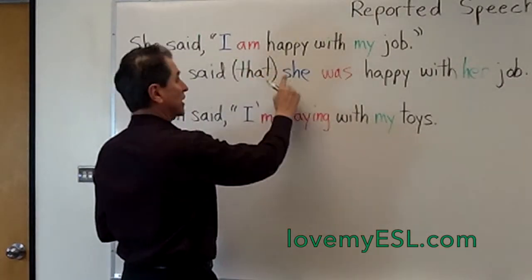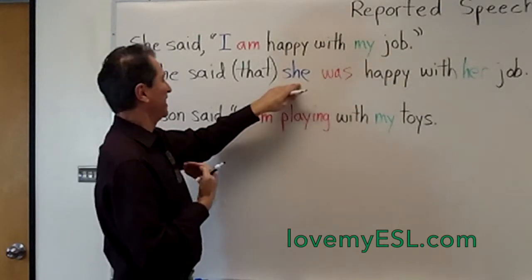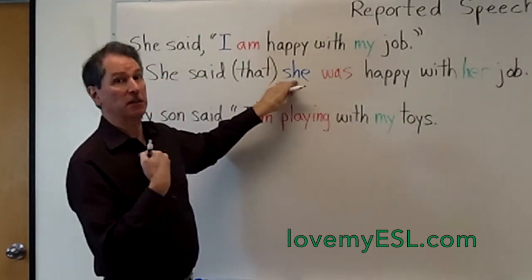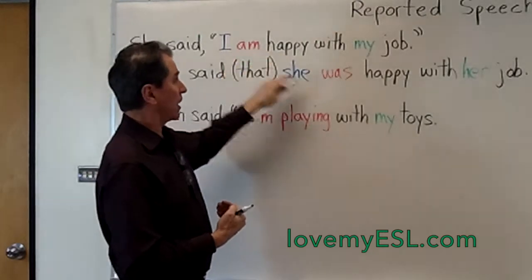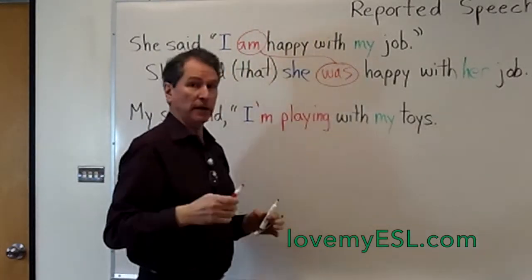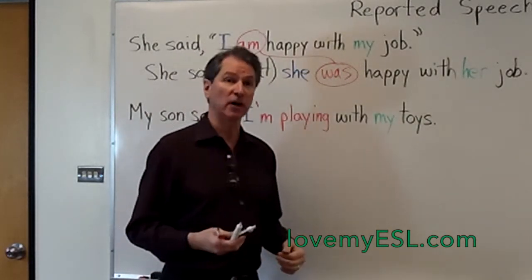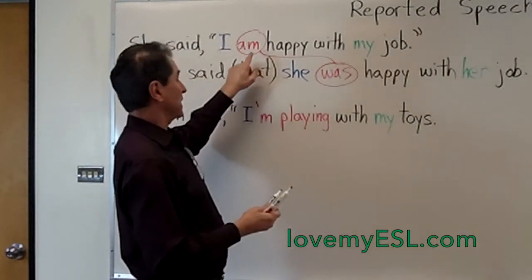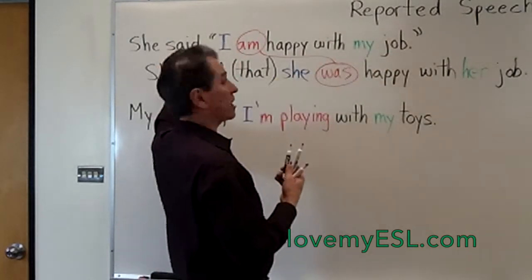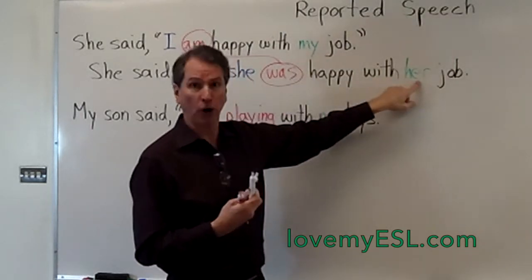You'll notice that I changed 'I' to 'she.' Why? Well, 'I' is the person talking, but this is not true for me — first of all, I'm not a woman. So she says 'I am happy with my job,' and I say 'she was happy with her job.' You'll notice that the verb changes here: 'am' changes to 'was.' In reported speech there are a number of verb changes. Simple present goes to simple past. Also, any possessive words change: the job belongs to her, so she said 'my job,' but it's her job, so I changed 'my' to 'her.'